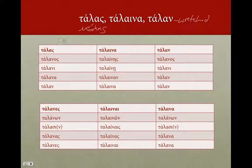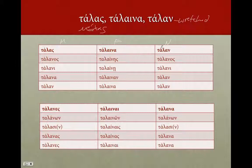Same pattern as we found with first and second declension adjectives: the masculine is given first, then the feminine, then the neuter. The stem for the masculine and neuter is found from the neuter singular — so talon is our stem. So in the masculine: talos, talanos, talani, talana, talon; plural: talanes, talanon, talasi, talanos; and then the vocative, talanes. So our vocative is our stem.